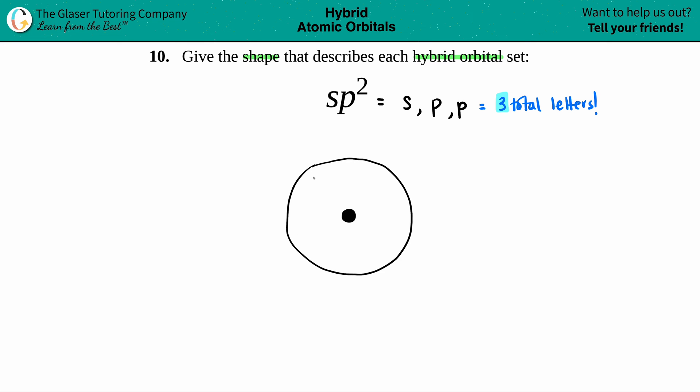You say to yourself, well how am I going to divide up three total orbitals in a circle? What would be the best possible format for that?